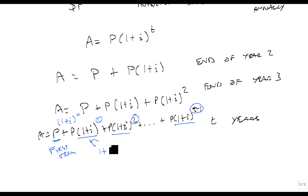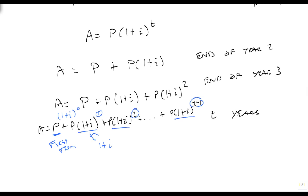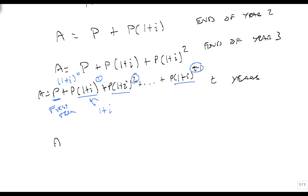And our sum can then be calculated as A is equal to the sum of N, which is equal to A1 times 1 plus R to the N, sorry, 1 minus R to the N, over 1 minus R.